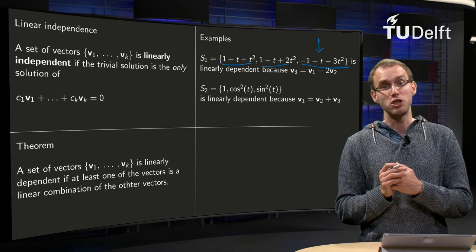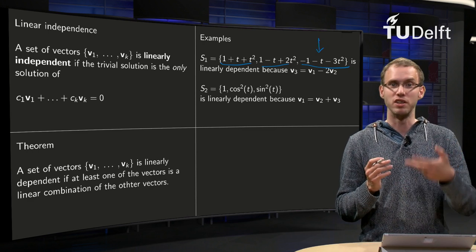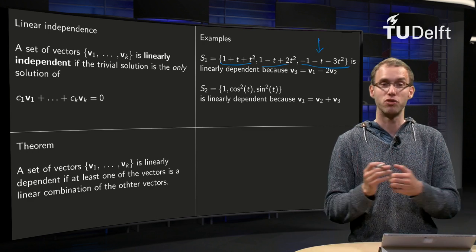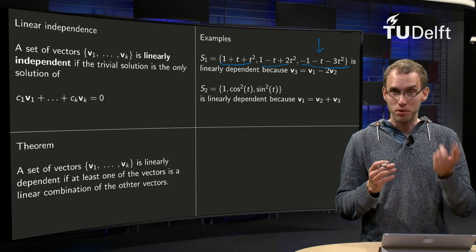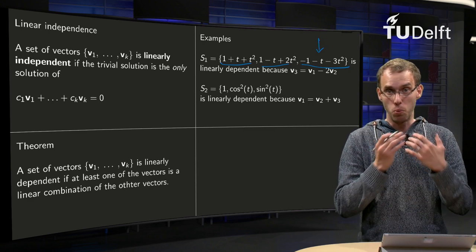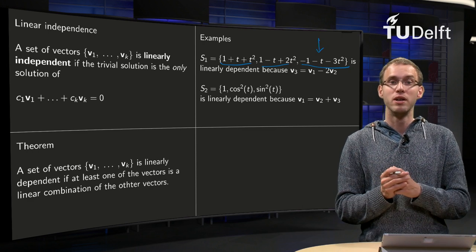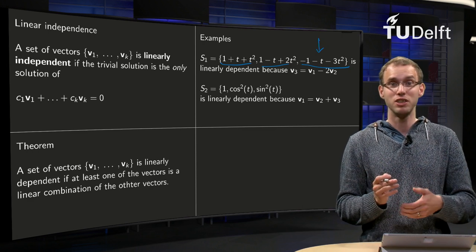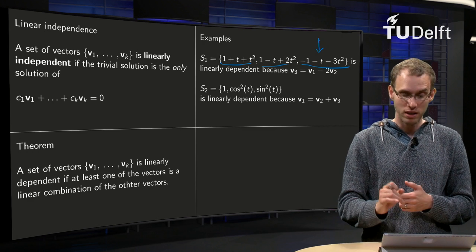And if we look at the second example, S2, where we have three functions, the functions 1, cos square t and sin square t, so if we look at the continuous functions, then here we see v2 plus v3 equals v1, so again we see a dependence relation, so the set S2 is dependent as well.